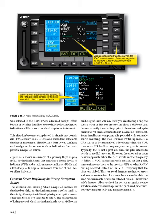The pilot must learn how to configure each navigation instrument to show indications from each possible navigation source. Figure 3-16 shows an example of a primary flight display (PFD) navigation indicator that combines a course deviation indicator (CDI) and a radiomagnetic indicator (RMI), and allows the pilot to display indications from one of two FMSs on either indicator. Common error — displaying the wrong navigation source: the enunciation showing which navigation sources are displayed on which navigation instruments are often small, so there is significant potential for displaying a navigation source other than the one you intended to select.